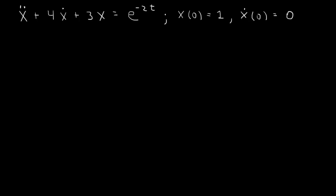Here I want to show you how to solve a second order linear inhomogeneous equation with constant coefficients. We're going to solve it with initial conditions x(0) equals 1, x-dot(0) equals 0. There's a three-step solution to this equation, so the first step is you find the homogeneous solution.